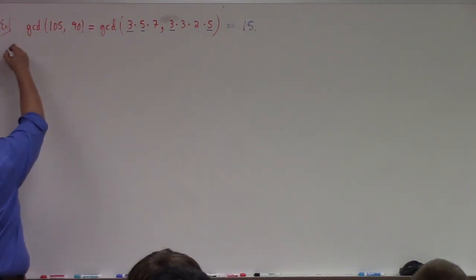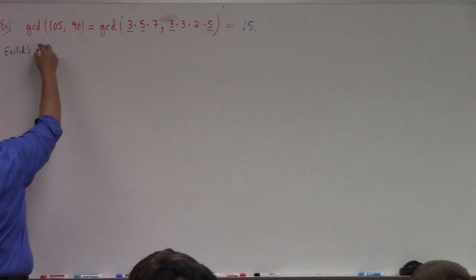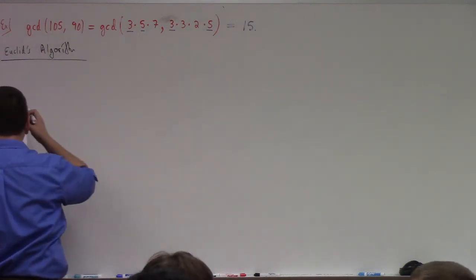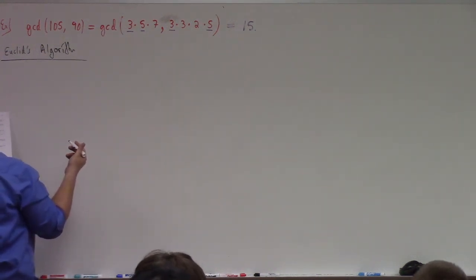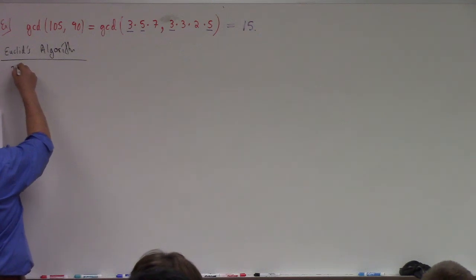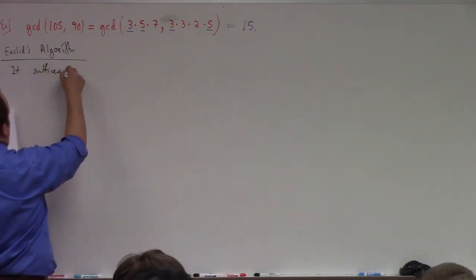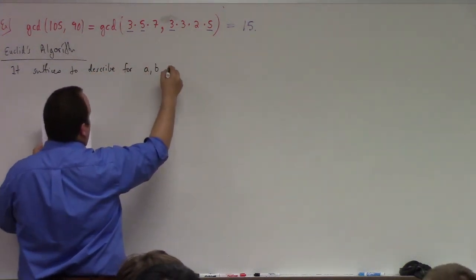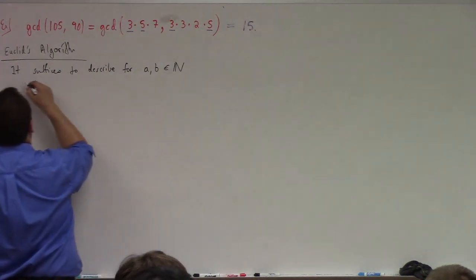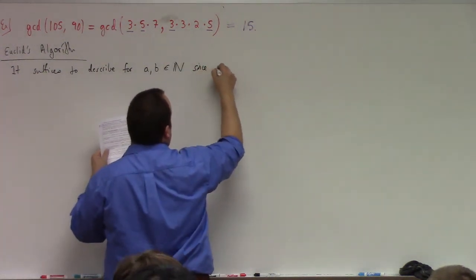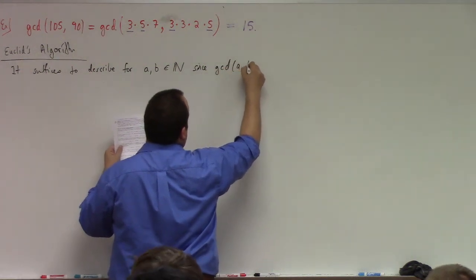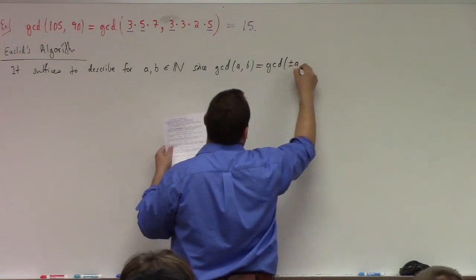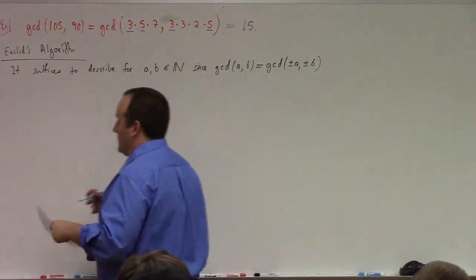I want to describe what's known as Euclid's algorithm, or sometimes Euclid's extended algorithm. It suffices to describe this for a and b natural numbers, since it's not hard to see that GCD(a, b) equals GCD(±a, ±b) for all possible sign cases. That follows from the theorems we've already shown.